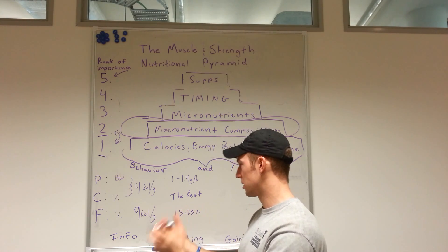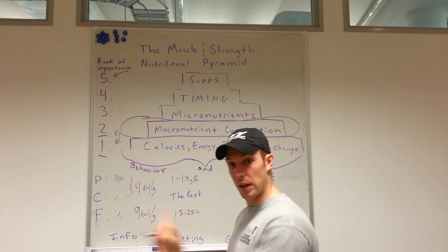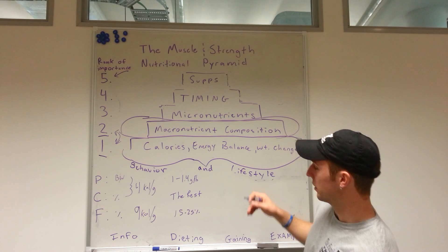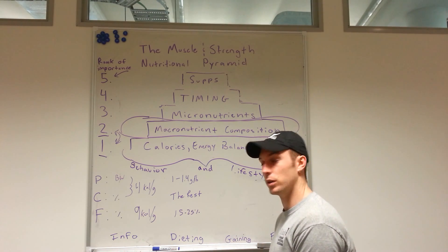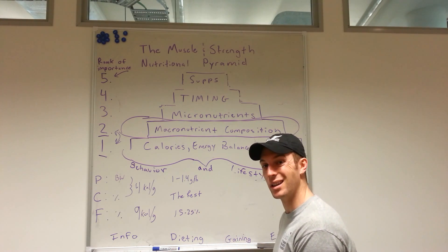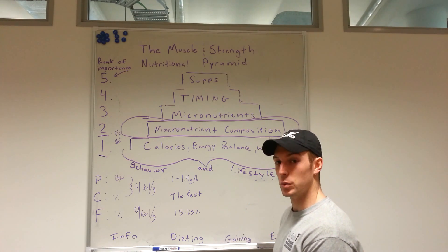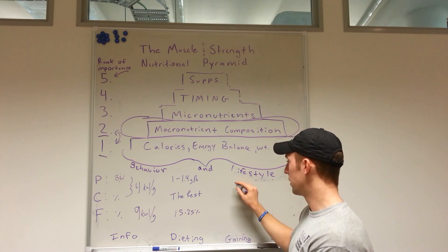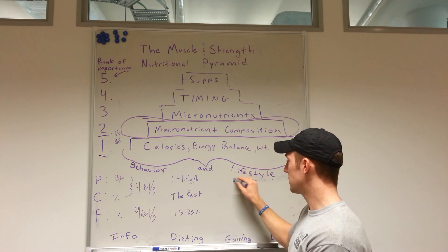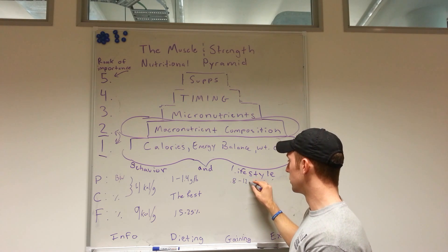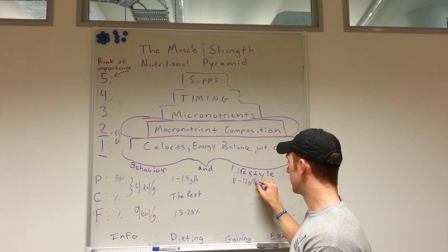Now as we move into our gaining phase, we don't need as much protein. We're not at risk for losing lean body mass just from being in a catabolic state for extended periods of the day. So I would say we can drop down these requirements a little bit, even down as low as 0.8 to 1.2 grams per pound.